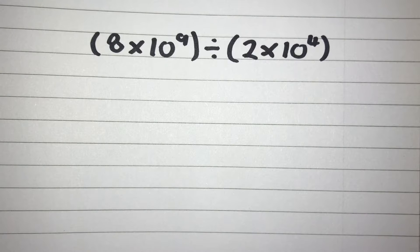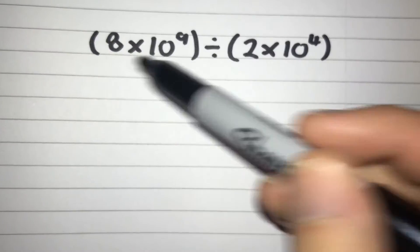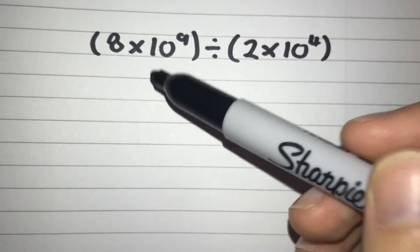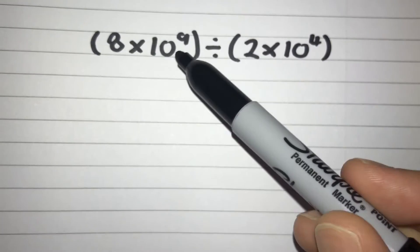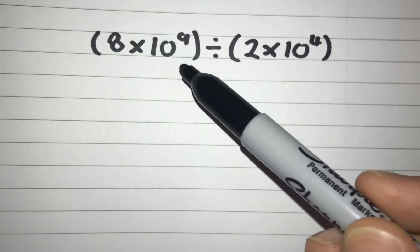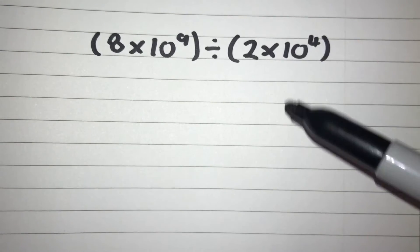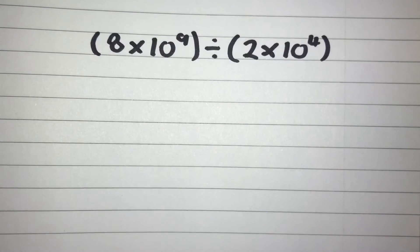In this video we're going to be dividing numbers that are in standard form. Just a reminder: what are our numbers in standard form? Well, they're numbers where we've got a number between 1 and 10 multiplied by a power of 10, and we're dividing it by another number between 1 and 10 multiplied by a power of 10.